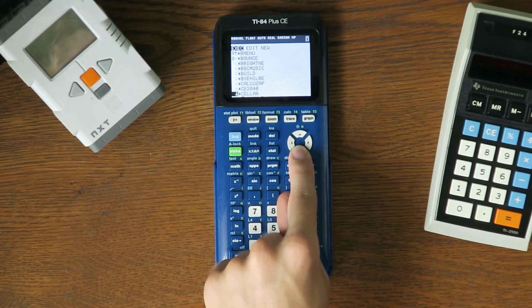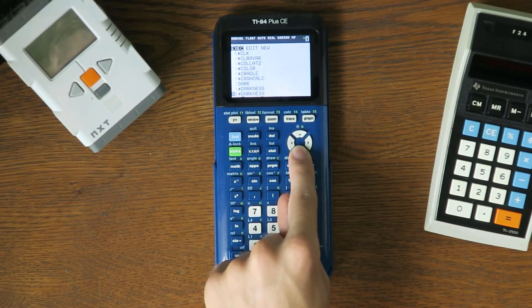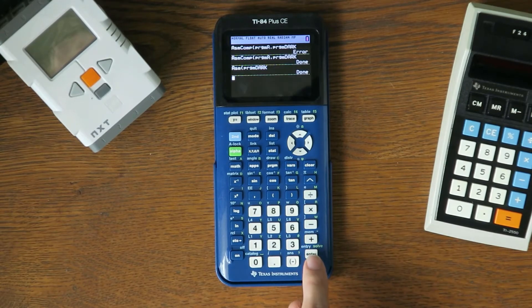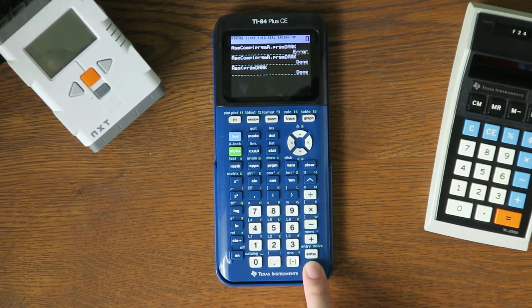Now press program, then select program dark, then press enter until it runs. If your calculator crashes, then try the steps again. If it keeps crashing, then keep watching and try the steps for OS 5.3.1.